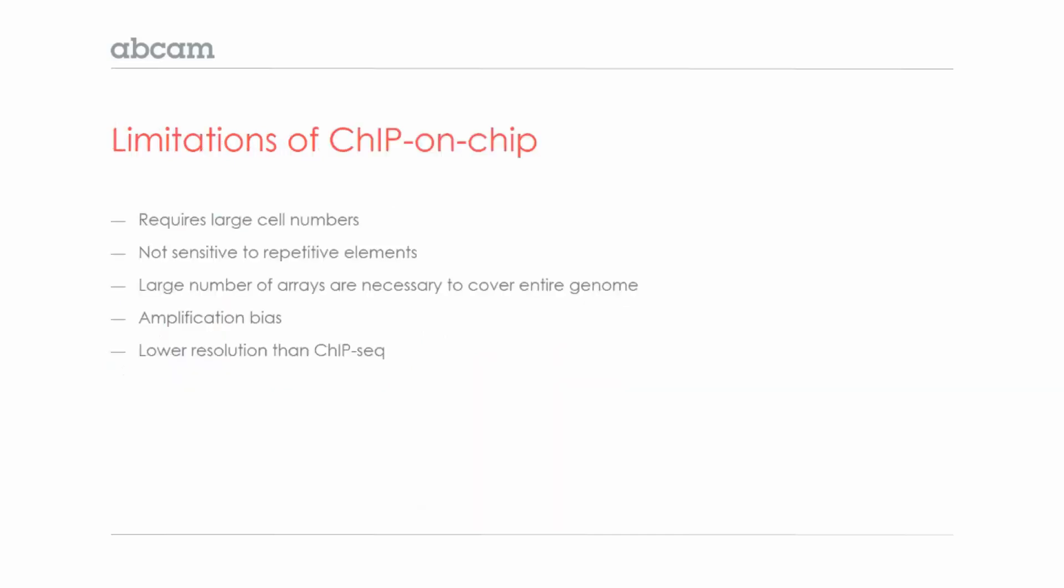There are some limitations of chip-on-chip, though as technology advances, these are becoming less of an issue. The first is that a large number of cells are required for chip-on-chip experiments. Chip-on-chip is also not sensitive to all of the repetitive elements in the human genome.